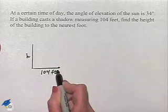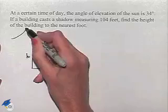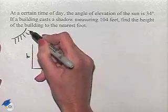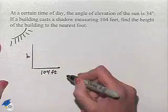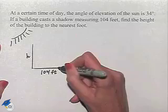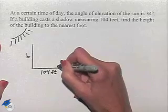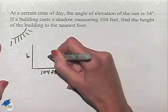Since the shadow is here to the right of the building, we have our sun in this direction. Now the angle of elevation would be the angle formed with the horizon going up toward the top of the building.